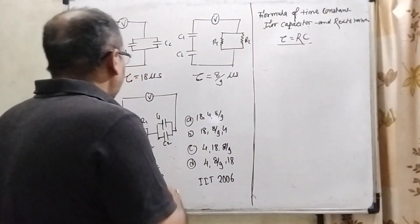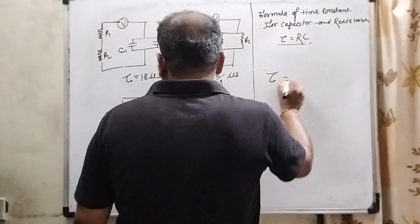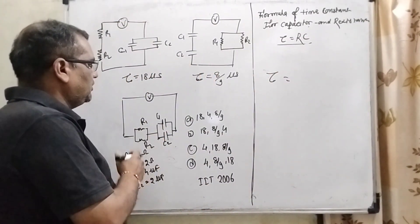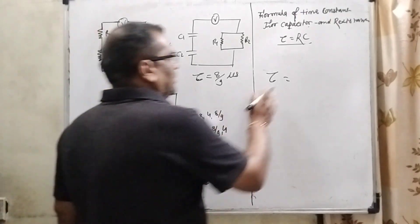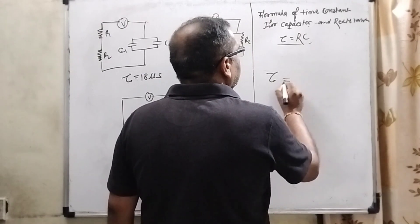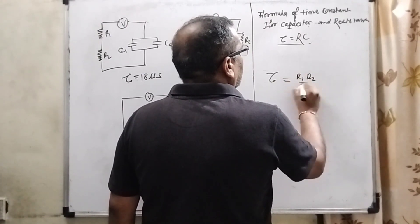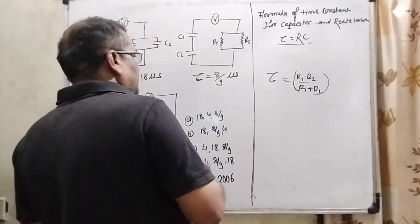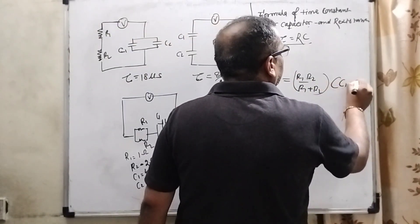Now for the third diagram, you can see that tau equal to, here R1, R2 are in parallel and C1 and C2 again, they are also parallel. So here for the resistance, parallel resistance, net resistance is R1 R2, R1 plus R2. And for parallel capacitors, that is C1 plus C2.